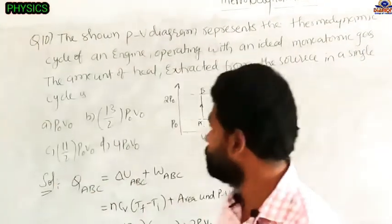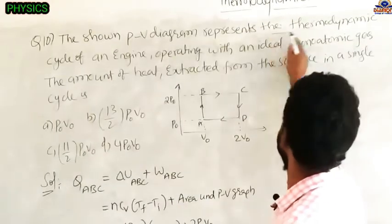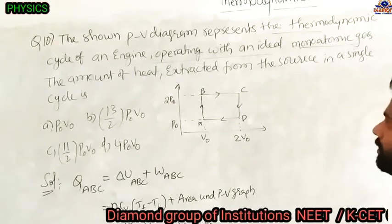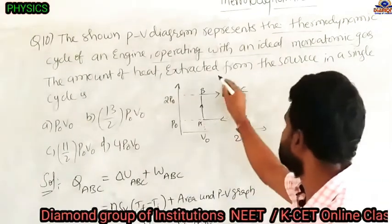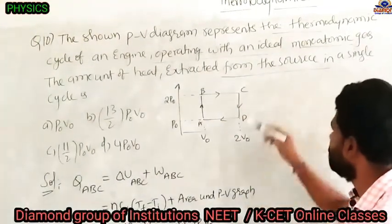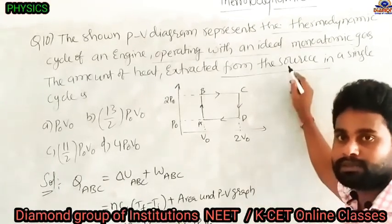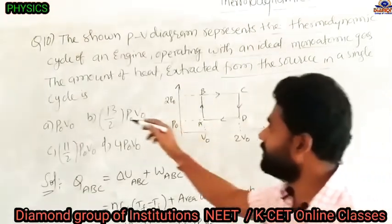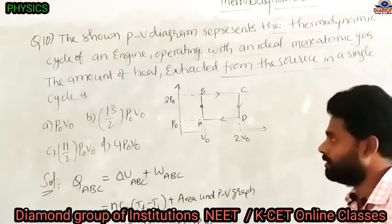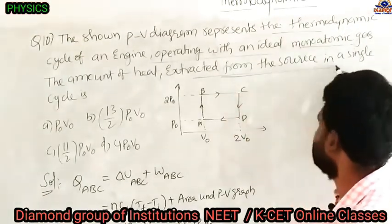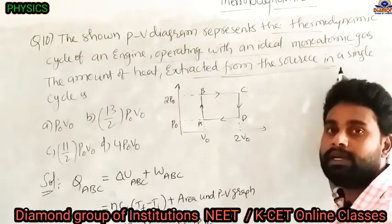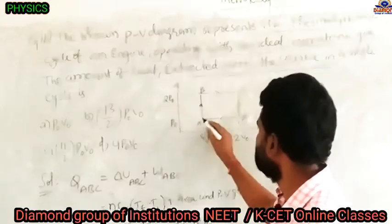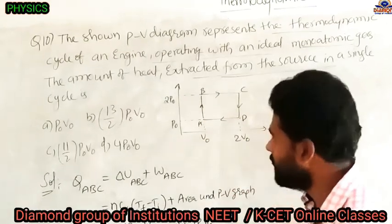Question 10: the PV diagram represents the thermodynamic cycle ABCDA of an engine operating with an ideal monoatomic gas. Find the amount of heat extracted from the source in a single cycle — that means heat given to the system. From A to B volume is constant, pressure increases from P₀ to 2P₀, so temperature increases and system absorbs heat.